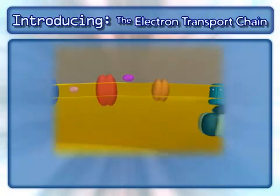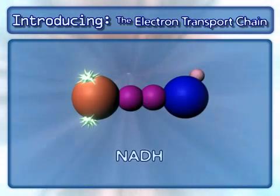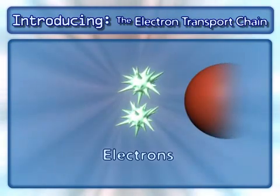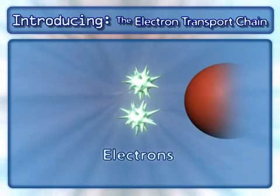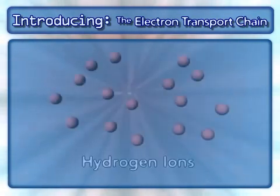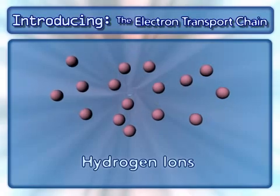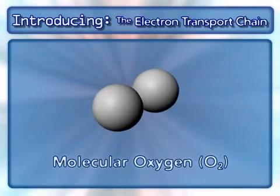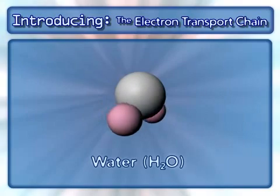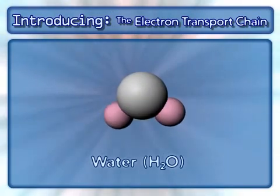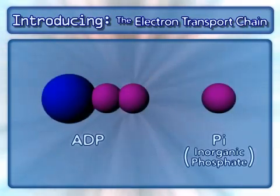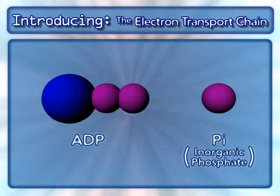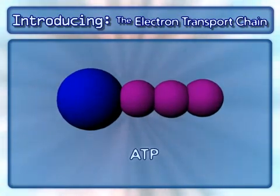Other key components in this process are NADH and the electrons from it, hydrogen ions, molecular oxygen, water, and ADP and inorganic phosphate, which combine to form ATP.